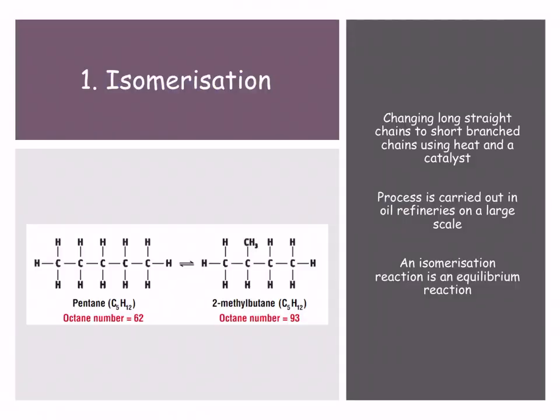Well we can use something called isomerisation. Remember we discussed that an isomer was the same chemical formula but different arrangement in space. So if we took our long straight chained alkanes and converted those into short branch chains we would actually increase the octane number. That is very simply done. If you look here on the left hand side we've got pentane at an octane number of 62. We get 2-methylbutane at an octane number of 93.